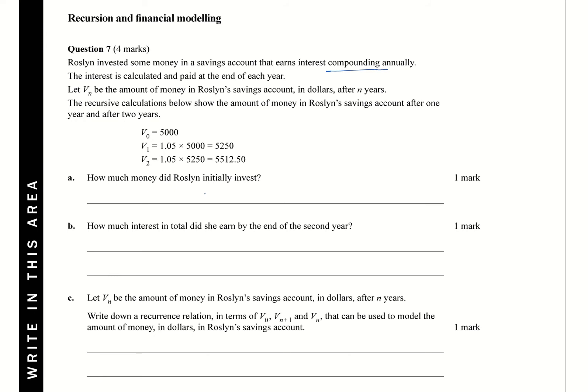So how much money did Roslyn initially invest? So when we look at that, that is immediately going to be V0. And we can see V0 is there. So her answer is, I should have said, that's V0. So all you need to put here is $5,000. You don't have to write V0, but I'm just showing that to highlight it. So you just put $5,000.